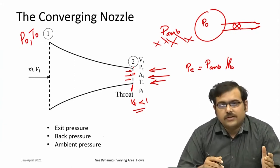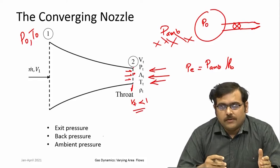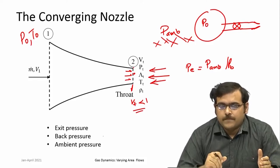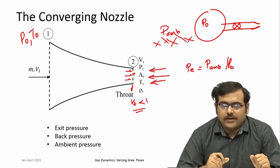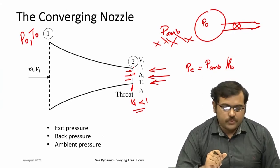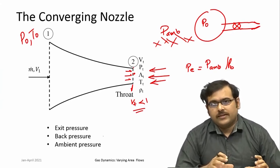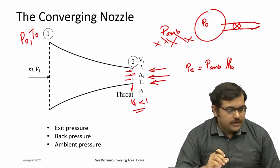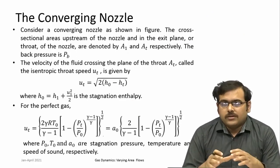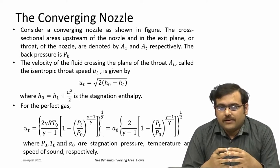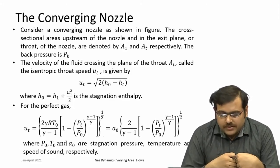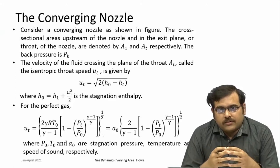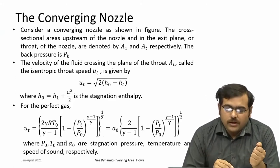But once the flow becomes sonic or supersonic, that information transfer gets cut off, and there are consequences for how the flow behaves. Because of this, we have to write all the equations — previously expressed in terms of Mach number or velocities — in terms of pressures and pressure ratios. It is an isentropic flow, so the velocity at the throat can be found: given stagnation enthalpy H_naught (= C_p T_naught) and enthalpy at the throat H_t (= C_p T), the throat velocity V_t = sqrt(2(H_naught − H_t)).